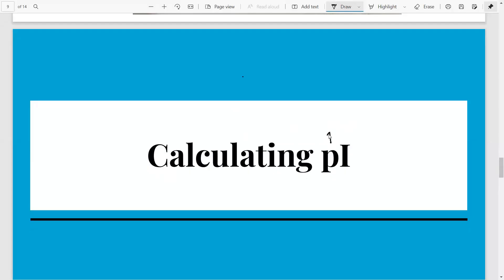So firstly what is pI? pI is also called as the isoelectric point. It is the point or the pH at which the amino acid has a net charge of zero or its overall charge is zero. So it is that pH where the amino acid has an overall charge of zero.